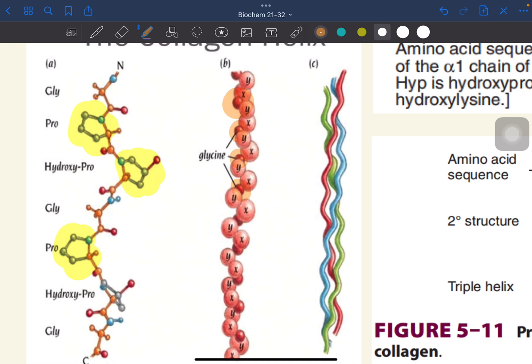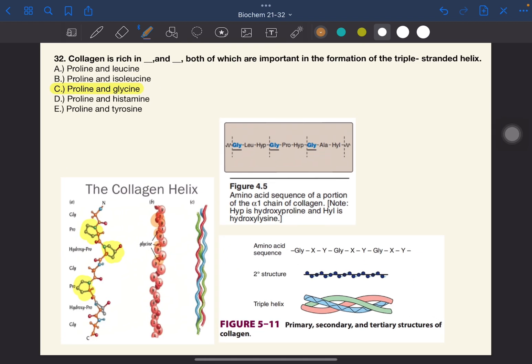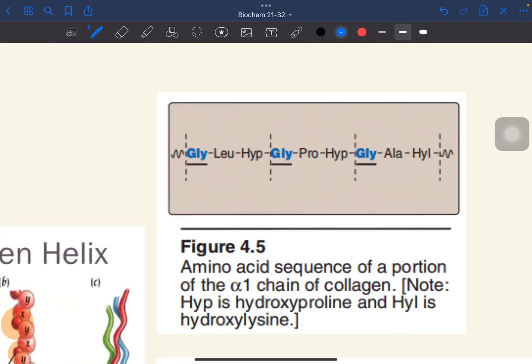The glycine residues are part of a repeating sequence, which is Gly-X-Y. X is frequently proline, while Y is hydroxyproline, or it can also be hydroxylysine.